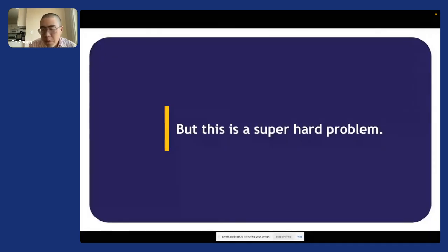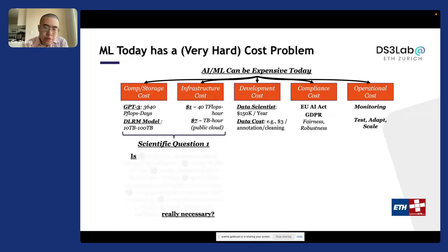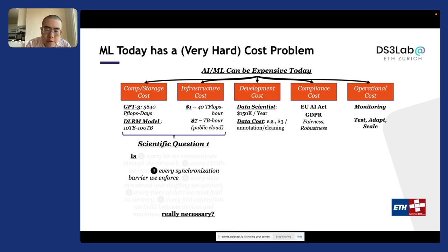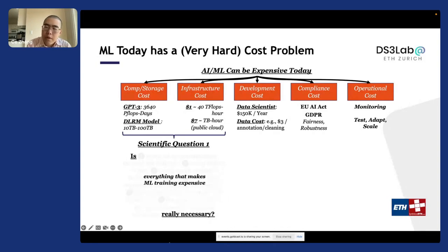This is a super hard problem because we cannot tackle all dimensions at the same time — it requires co-designing the algorithm and the system side. My research group focuses on two different questions. The first is looking at every single bit communicated through the network, every floating-point operation, every synchronization barrier where machines wait for each other, every data movement and shuffling, every piece of data held in memory, and every fast connection between devices that makes infrastructure expensive. We look at all these components and ask: are they really necessary?